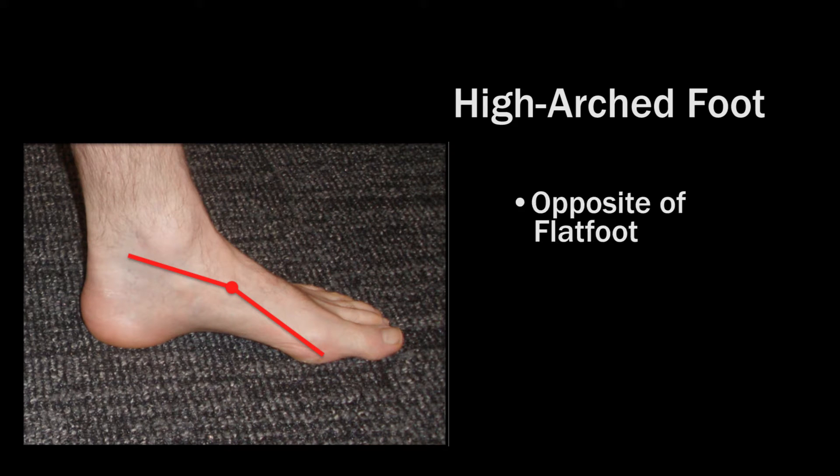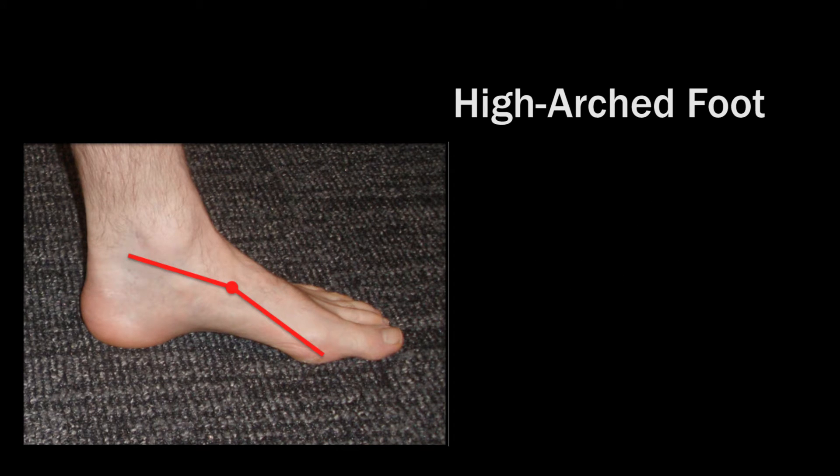What are the characteristics of a high arched foot? For a high arched foot you have really the opposite — the arch is actually quite stable, and the first metatarsal, the area associated with the great toe, is actually pointed downwards.